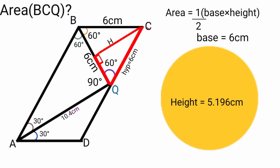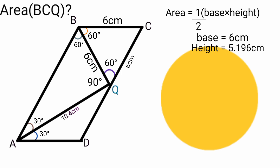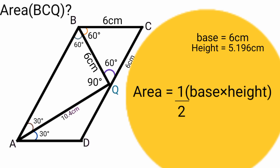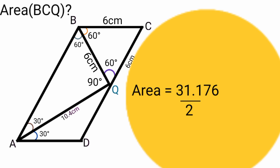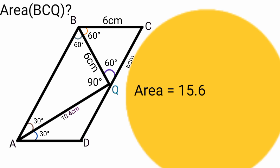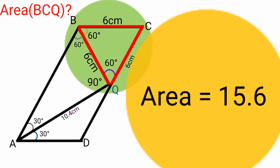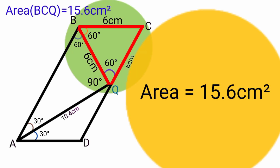We have found the height of triangle PCQ to be 5.196 centimeters and the base is 6 centimeters. Substituting into area equals half base times height: area equals one half times 6 times 5.196, which equals 15.588, approximately equal to 15.6. So the area of this triangle is 15.6 centimeters squared.